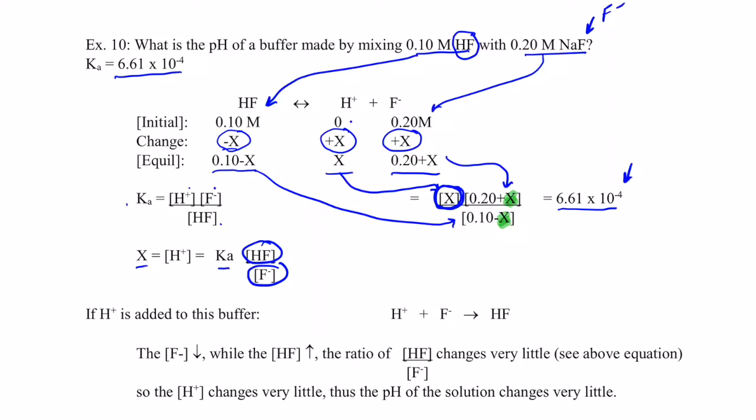Okay, if I want to solve for my H plus, which is my X, let's just call that H plus, okay kiddos? My H plus, right there, that will be equal to 6.61 times 10 to the negative fourth times 0.10,